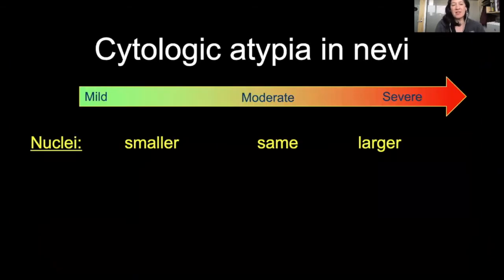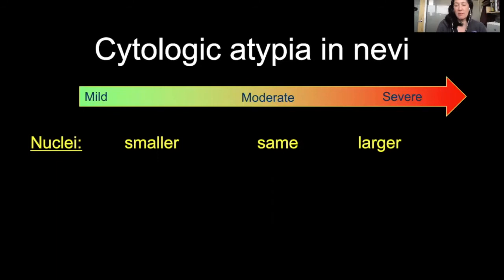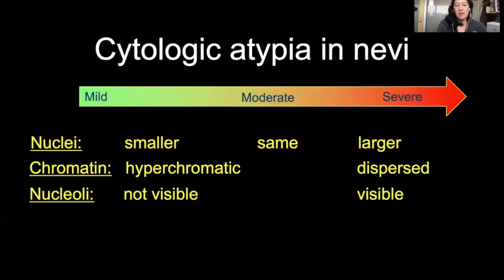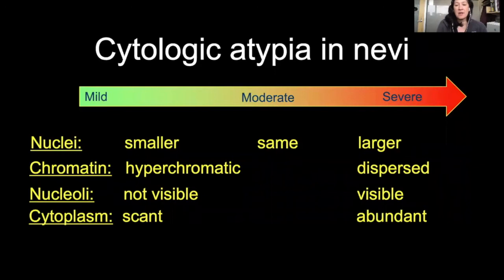Cytologic atypia: we can rate the degree of atypia based on nuclear size, with more severely atypical melanocytes having larger nuclei and more dispersed chromatin, and visible nucleoli — with the classic descriptor that melanoma has cherry red nucleoli. In more severely atypical melanocytic proliferations, there's more abundant cytoplasm versus scant.